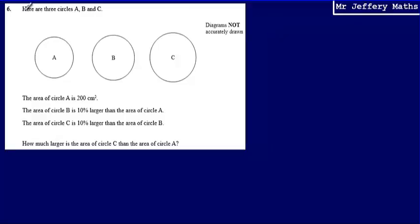This is question six. We're told that there are three circles A, B and C. The area of circle A is 200 centimetres squared. The area of circle B is 10% larger than the area of circle A, and the area of circle C is 10% larger than the area of circle B. We're then asked how much larger is the area of circle C than the area of circle A.